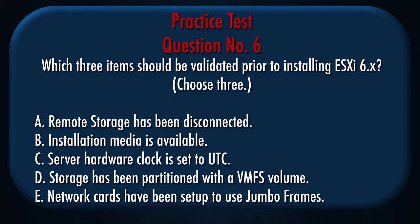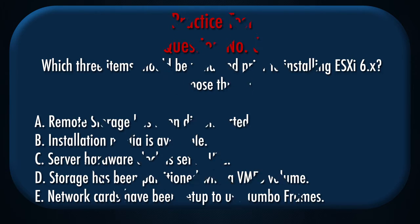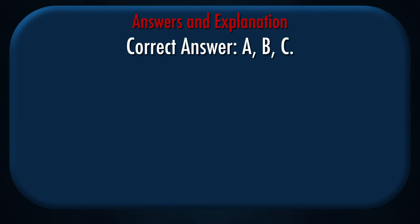C. NFS data store can be concurrently mounted using NFS 4.1 on one host and NFS on another. C. NFS 4.1 data stores to UTC. D. Storage has been partitioned with a VMFS volume. E. Network cards have been set up to use jumbo frames. Correct answer: A, B, C.